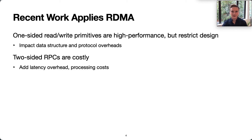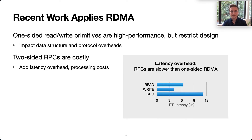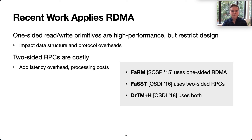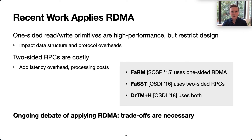Two-sided RPCs are an alternative to one-sided RDMA that provide full software flexibility. However, they don't offer the same latency savings potential, and they don't achieve the CPU bypass goal. Different research systems have made different choices in the RDMA design space. FARM uses one-sided reads and writes, FaSST uses two-sided RPCs, and Dr.TM+H uses a combination of the two. This has created an ongoing debate over applying RDMA — one-sided versus two-sided. It's difficult to achieve both efficient protocol communication and CPU bypass performance benefits.